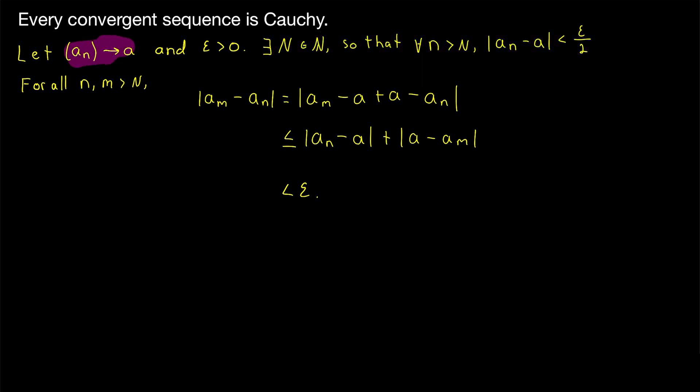Since An is converging to A, we know there exists a natural number big N so that every term of the sequence after the big Nth term is within epsilon over 2 of the limit. Since epsilon is greater than zero, epsilon over 2 is greater than zero, so we're guaranteed this is true by the definition of An converging to A.